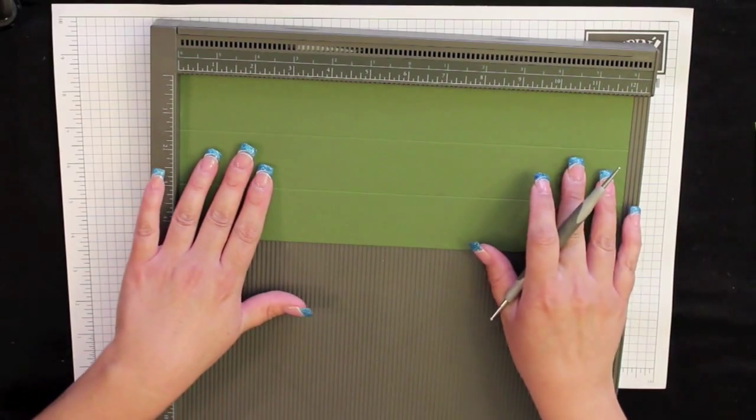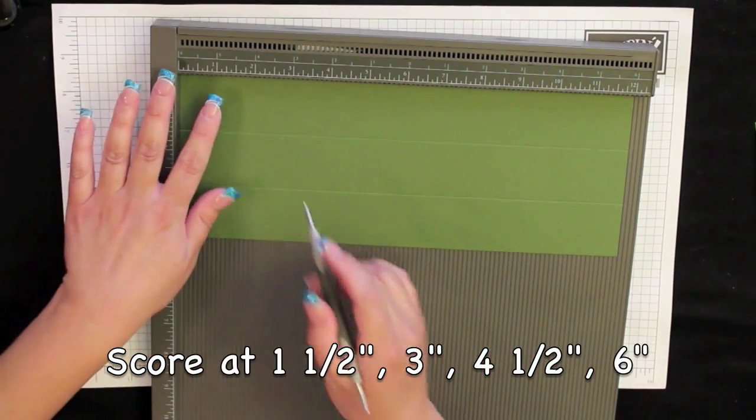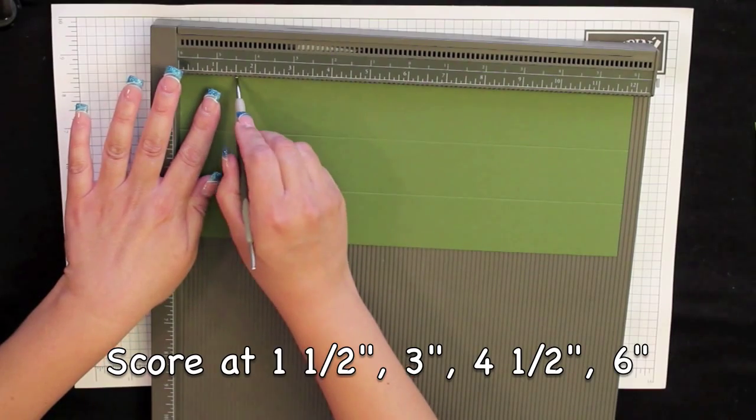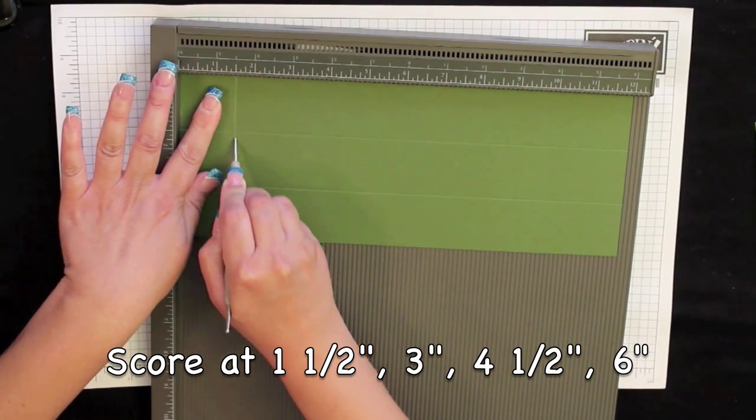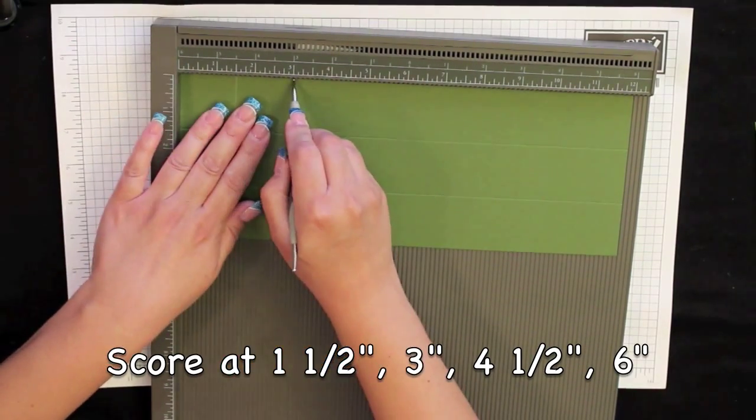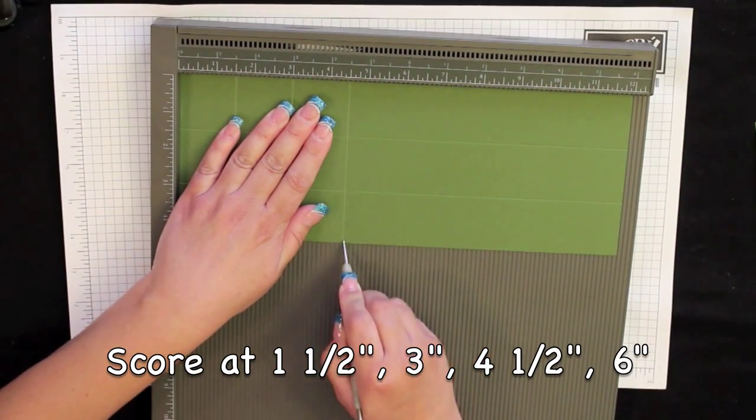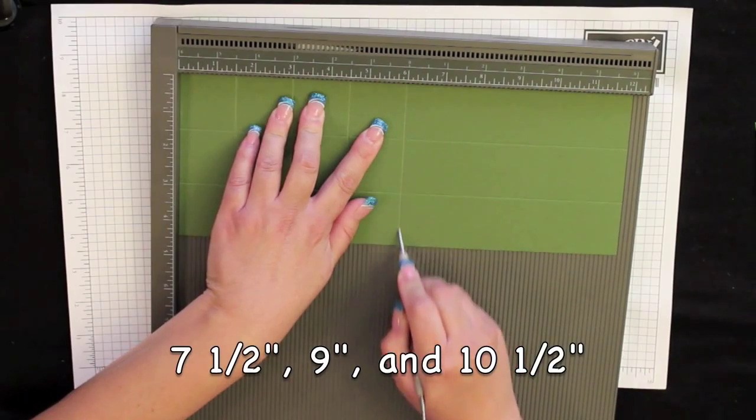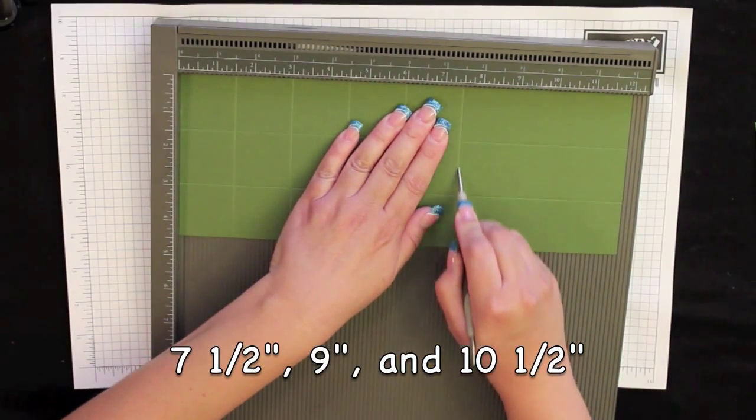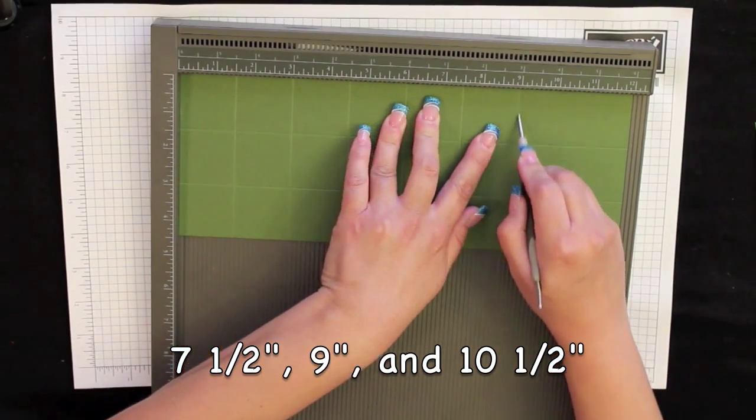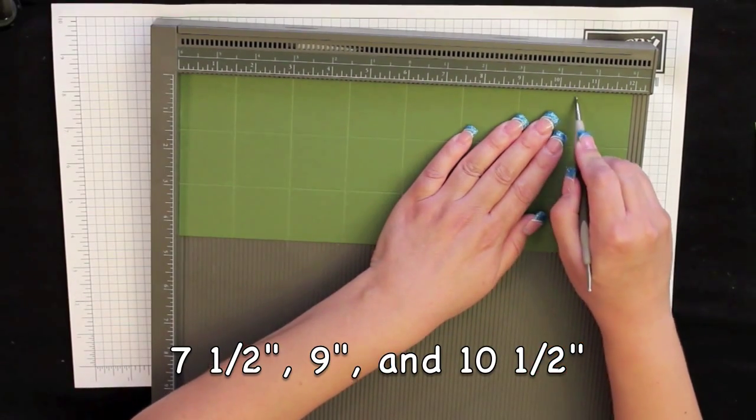Rotate it so the 12 inch side's going across the top and you're going to score it all the way the length of the paper at every 1 1/2 inch. So 1 1/2, 3, 4 1/2, 6, 7 1/2, 9, and 10 1/2.